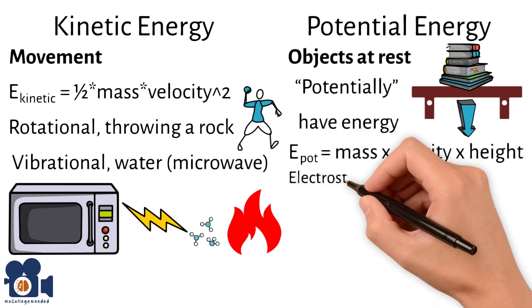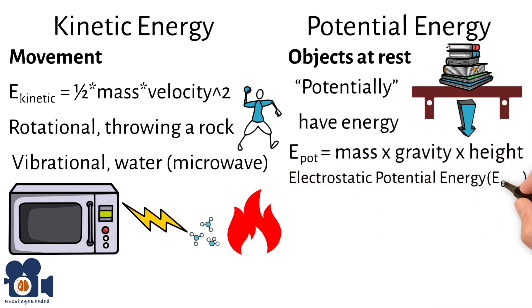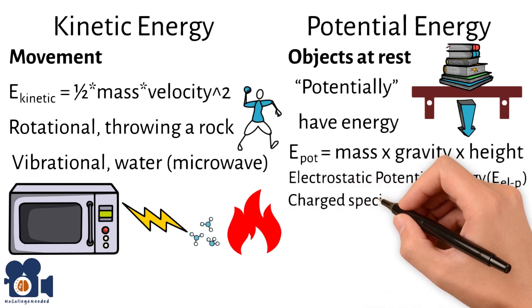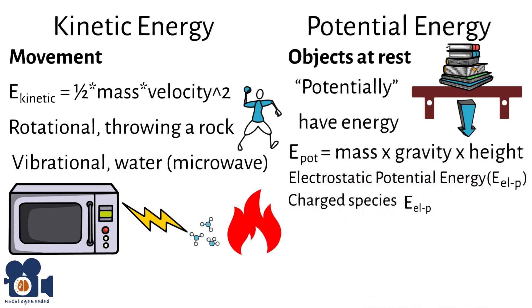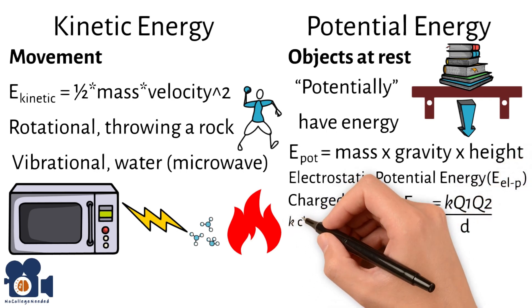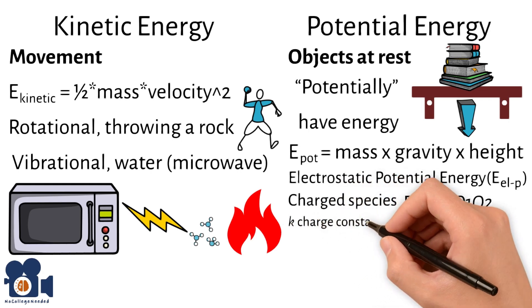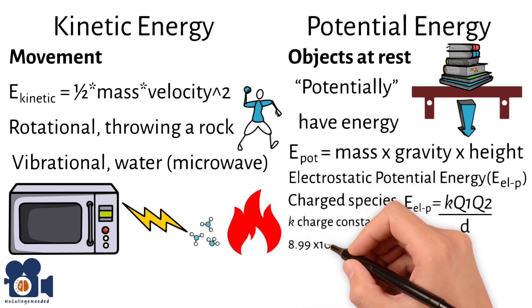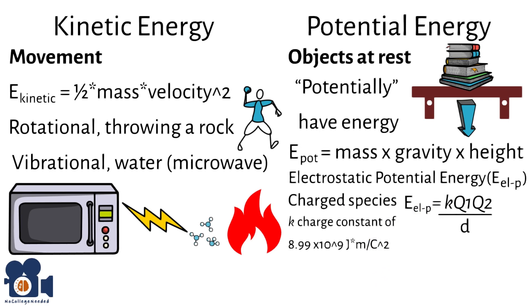The second relates to electrostatic potential energy, EELP, and is critical when dealing with charged atoms, molecules, or ions, and the equation is EELP equals K times Q1 times Q2 divided by D, where K is a charge constant of 8.99 times 10 to the 9th joules times meters divided by Coulomb squared. Q1 and Q2 are the electrical charges of specific species you're looking to calculate, and D is the distance between the species.